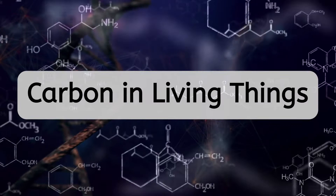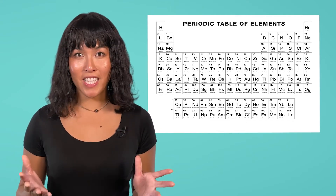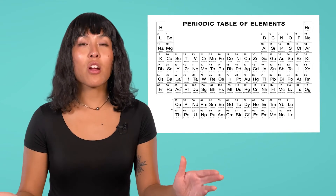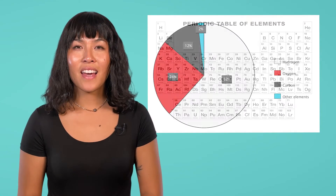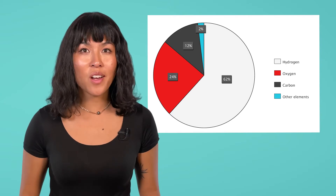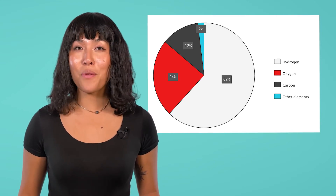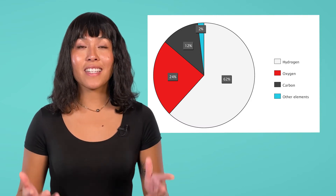Carbon atoms are versatile because they can bond with up to four atoms, and carbon-based molecules exist in a wide variety of shapes and sizes. The periodic table contains 118 known elements; however, we and other living things are made almost entirely of only a few of these. As this pie chart shows, 62% of the atoms that make up our bodies are hydrogen and 24% are oxygen. Much of the hydrogen and oxygen is in the form of H2O, as water makes up a large percentage of our bodies. The third most common element is carbon.